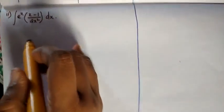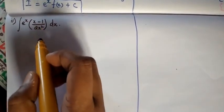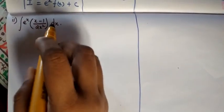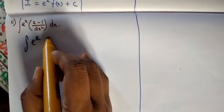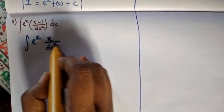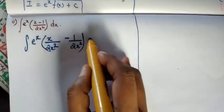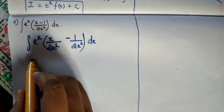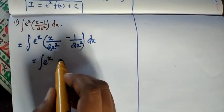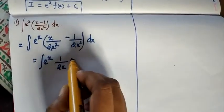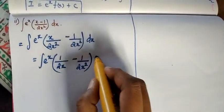Let us start with the second problem: integral eˣ(x minus 1) divided by 2x² dx. We can rewrite this as eˣ times x divided by 2x² minus 1 divided by 2x², which simplifies to integral eˣ times (1 divided by 2x minus 1 divided by 2x²) dx.